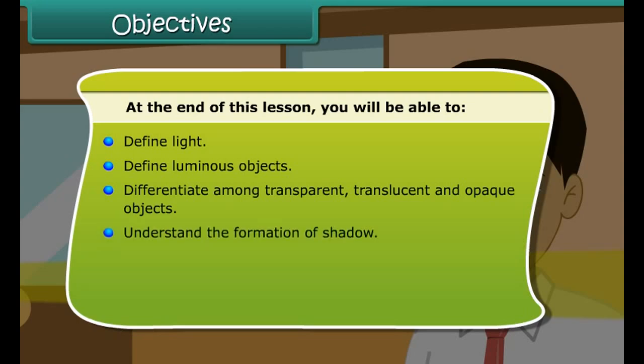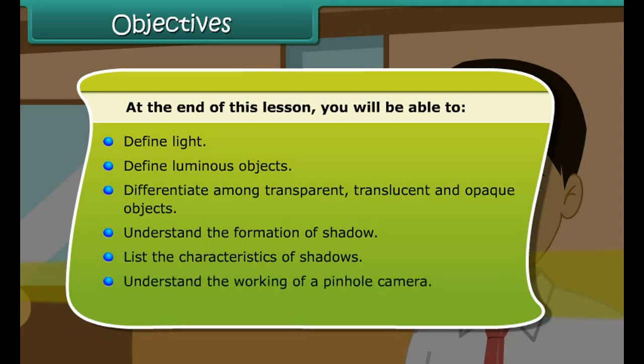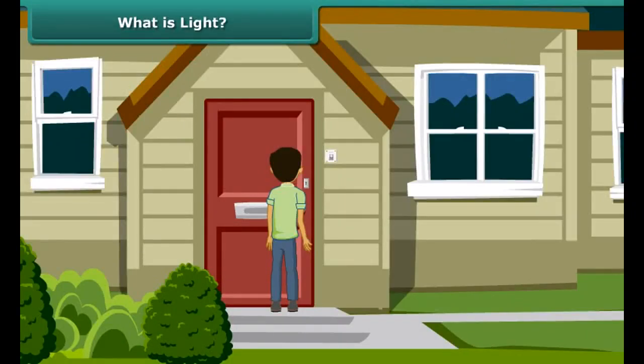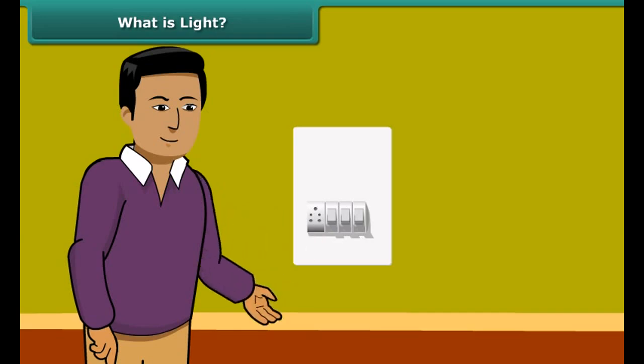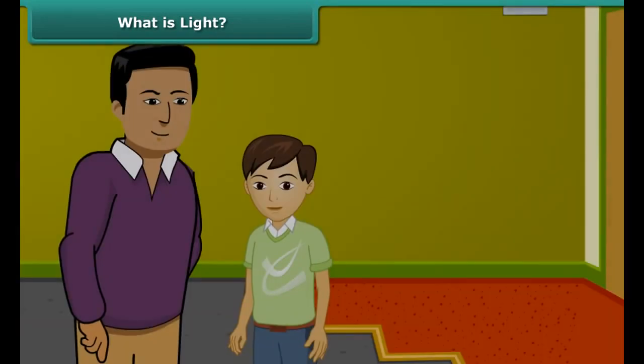At the end of this lesson you'll be able to: define light; define luminous objects; differentiate among transparent, translucent, and opaque objects; understand the formation of shadows; list the characteristics of shadows; understand the working of a pinhole camera; and define reflection of light.